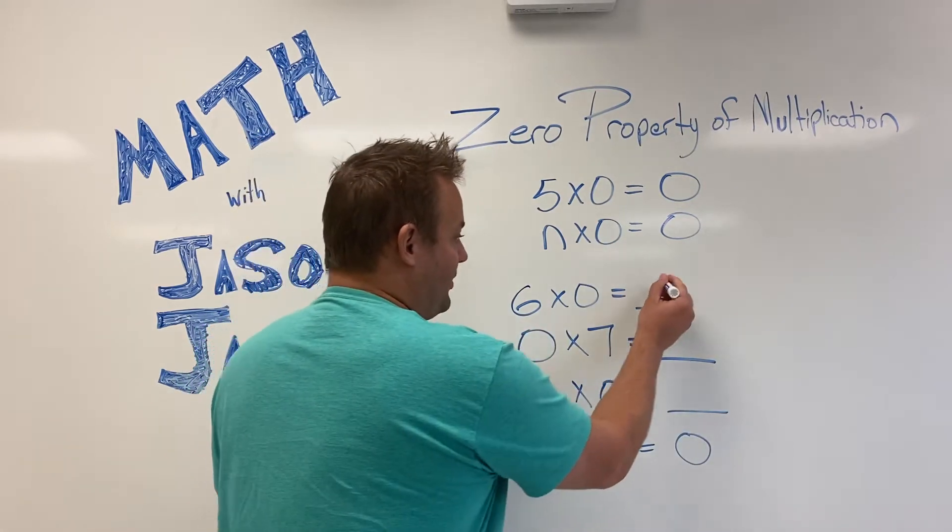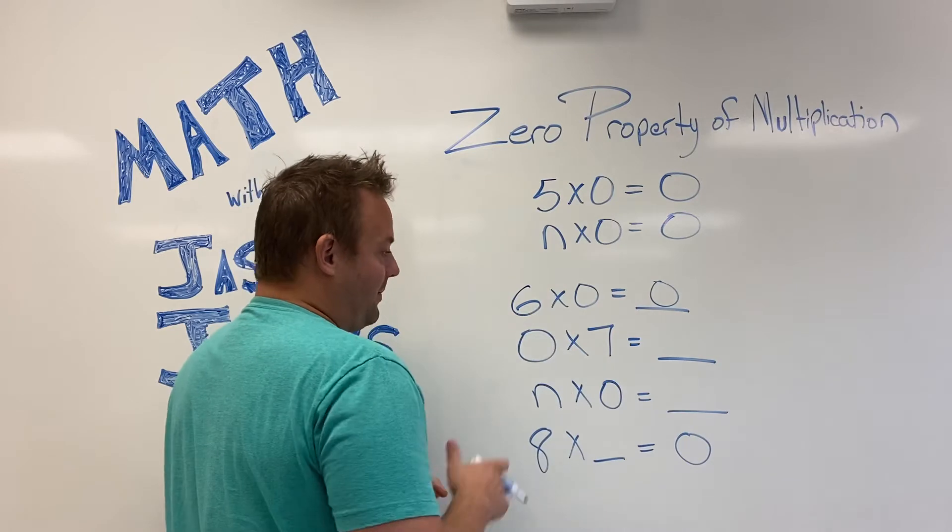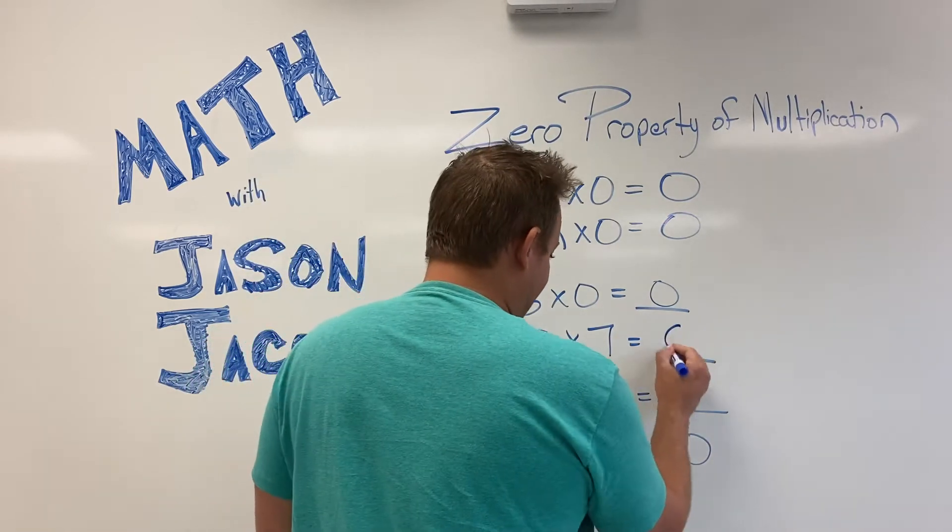Six times zero, well, that's zero. That's the zero property of multiplication. Zero times seven, yeah, that's zero.